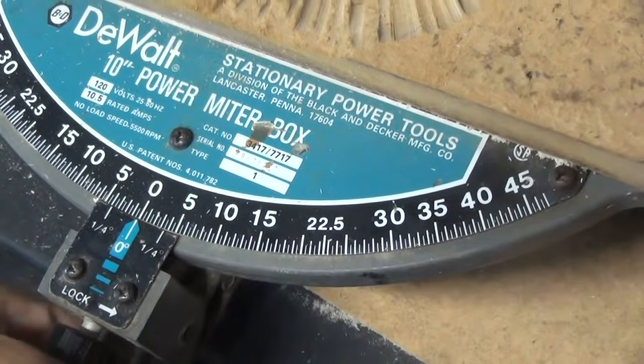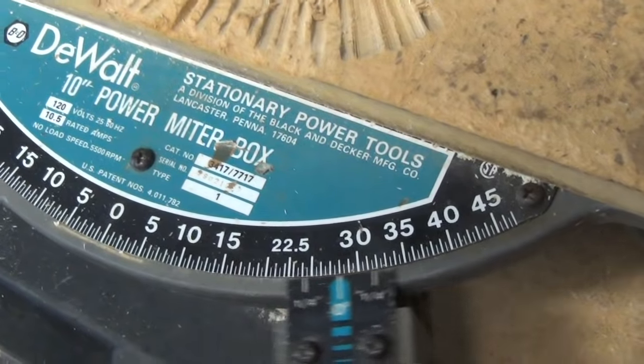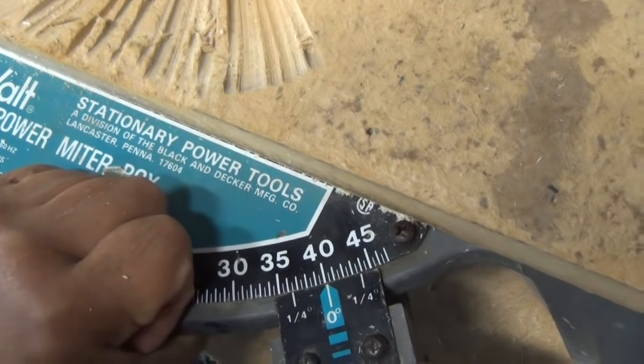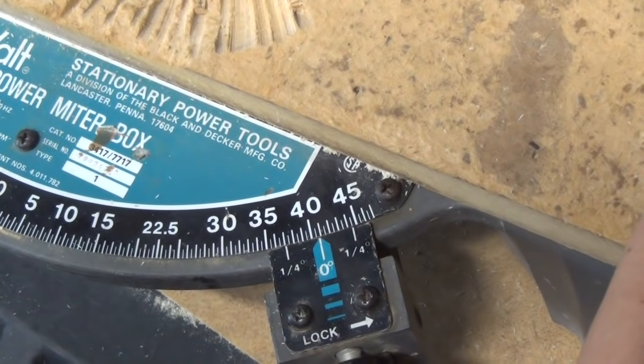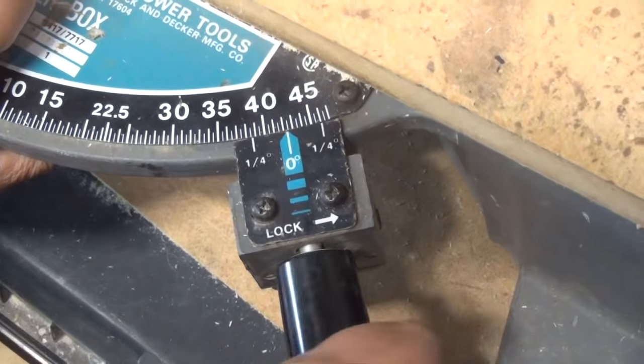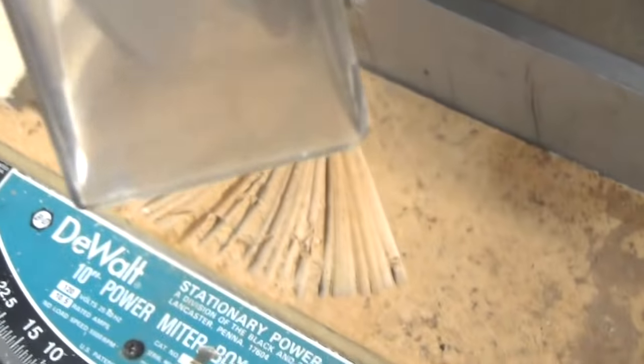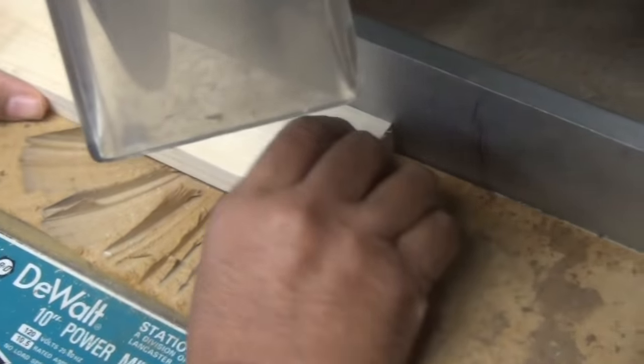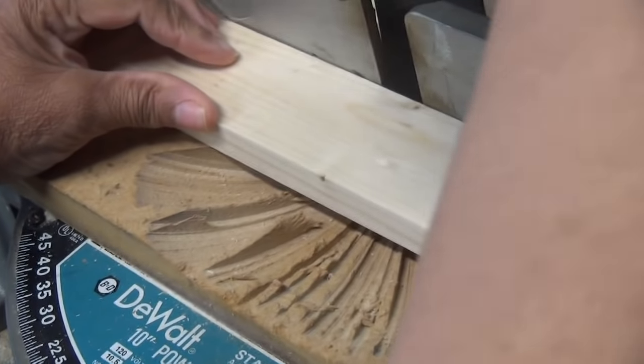So what we're going to do is we're going to take our miter saw, and we're going to set it to 42 and a half. It's almost there. One, two, and a half, right there. Setting our miter saw to 42 and a half, now I'm going to cut my piece. Here we go.